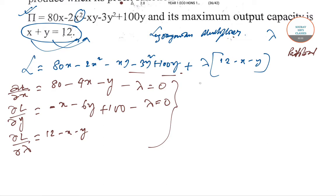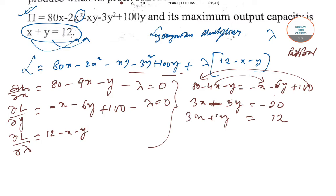We have three equations. Equate the first two with lambda: 80 minus 4x minus y equals minus x minus 6y plus 100. Simplifying: 4x minus x is 3x, minus 6y plus y is minus 5y, giving 3x minus 5y equals minus 20. We also have x plus y equals 12.